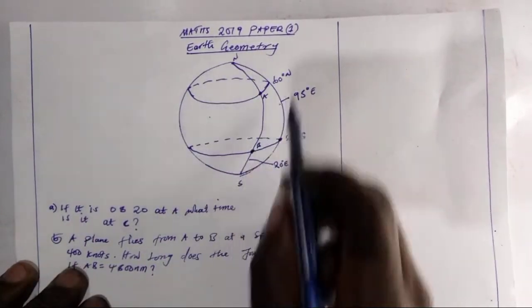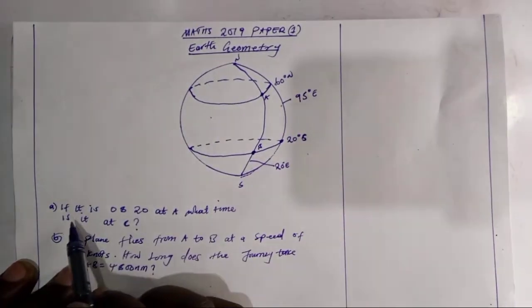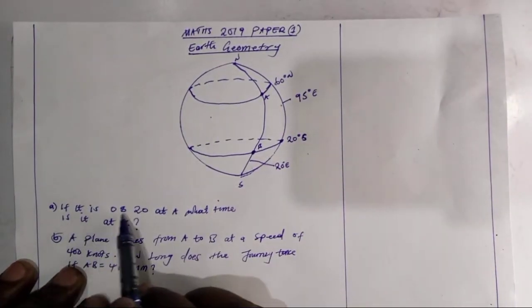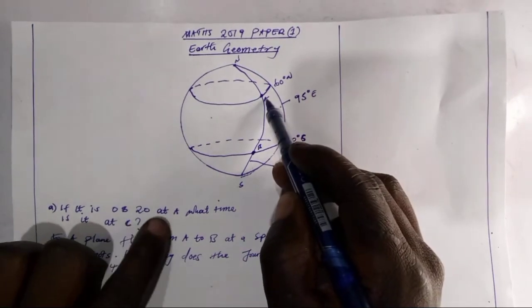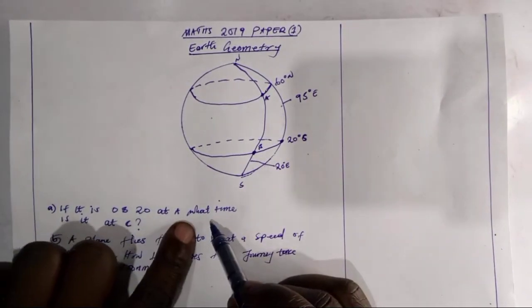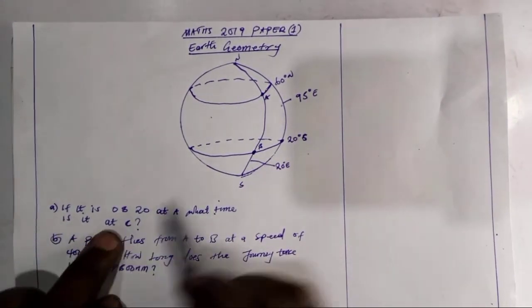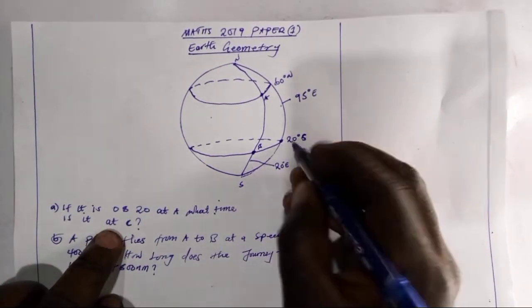We have this question. If it is 8:20 at A, what time is it at C? This is C here.